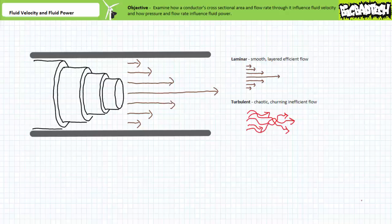Beyond a certain fluid velocity transition point, flow becomes turbulent. Turbulent flow is characterized by a chaotic, churning action and is inefficient — systems experiencing turbulent flow might run unusually hot and exhibit early thermal breakdown of the oil. The velocity at which flow transitions to turbulent is described by the Reynolds number, which depends upon properties of the fluid, specifically velocity and kinematic viscosity — a measure of a liquid's resistance to flow.